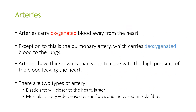Arteries carry oxygenated blood away from the heart. The exception is the pulmonary artery, which carries deoxygenated blood to the lungs. Arteries have thicker walls than veins to cope with the high pressure of blood from the heart, and there are two types: the elastic artery and the muscular artery. Elastic arteries are closer to the heart and larger, while muscular arteries have decreased elastic fibres and increased muscle fibres.